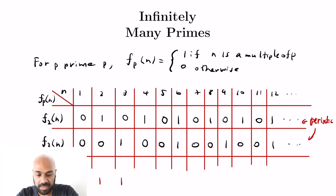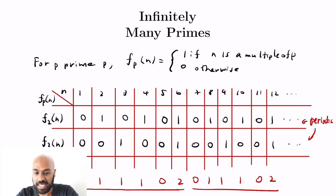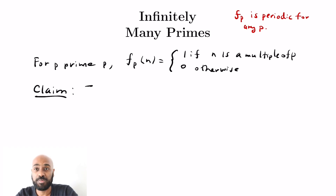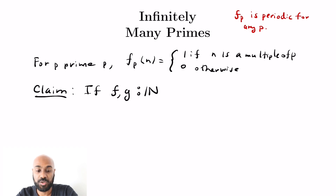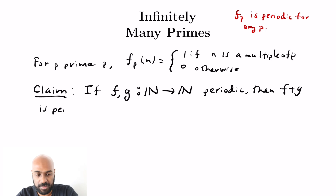If we add these two functions, it keeps track of numbers based on whether they're a multiple of 2, 3, or both. The sum goes 0,1,1,1,0,2,0,1,1,1,0,2,... and is periodic. It turns out that the sum of any two periodic functions from the naturals to the naturals is itself periodic. We're going to prove this explicitly. Our claim is: if f and g are functions from the natural numbers to the natural numbers and both are periodic, then the sum function is also periodic.